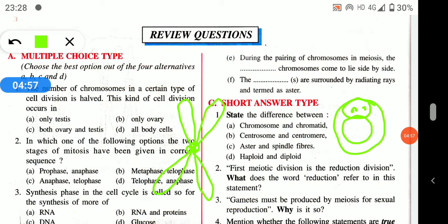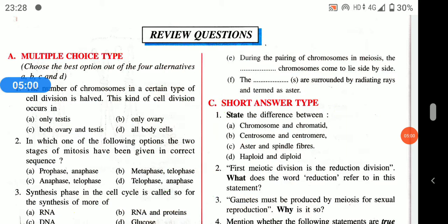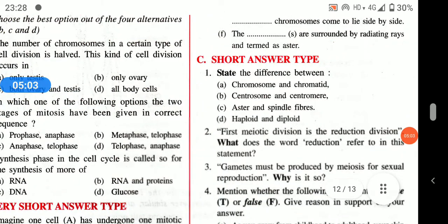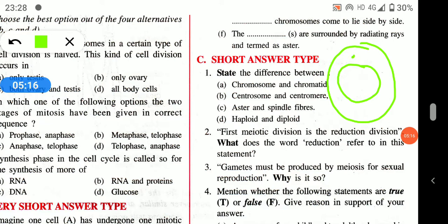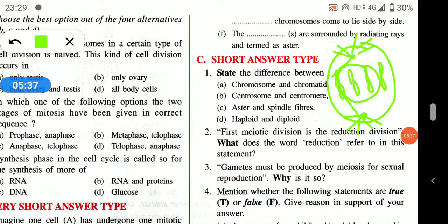What is the difference between aster and spindle fiber? Aster rays are found only in animal cells, while spindle fibers are present in both animal and plant cells. Aster rays radiate from the end of the centriole and fix its position. Spindle fibers are thread-like structures that arise from the centriole on one end and attach to the centromere of the chromosome on the other.